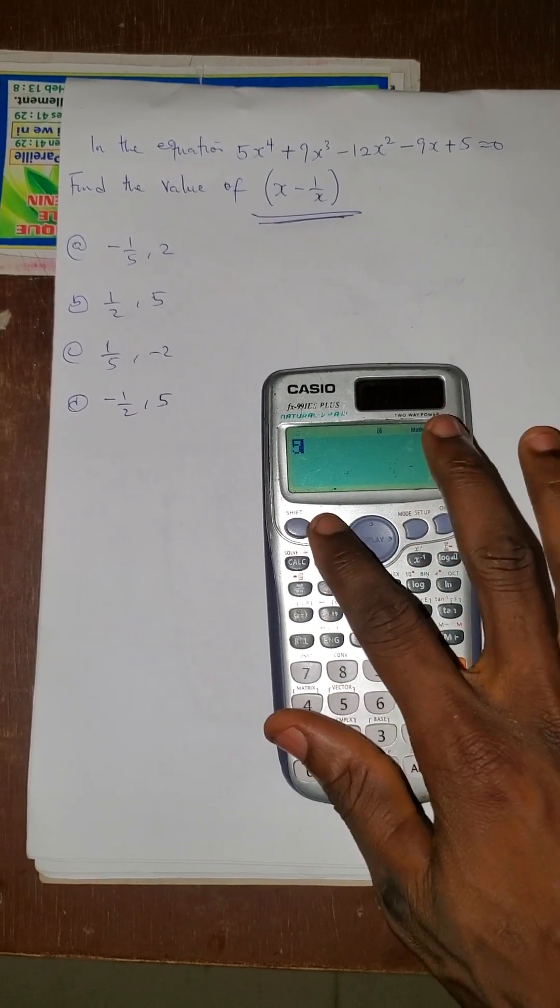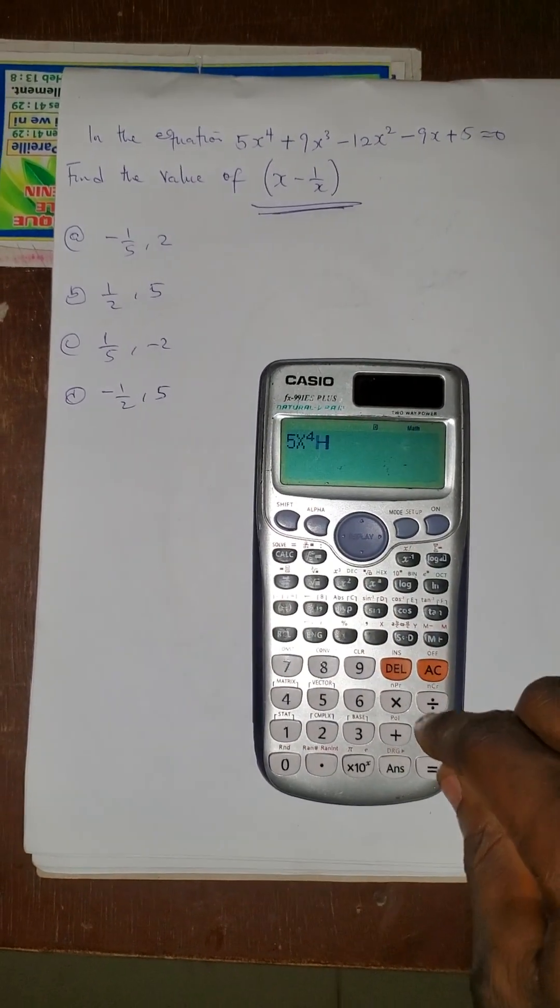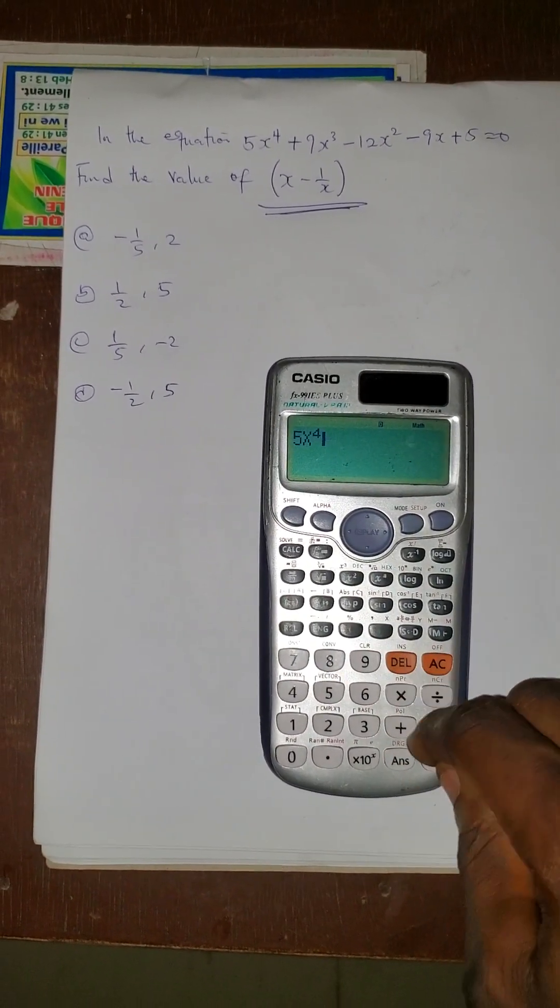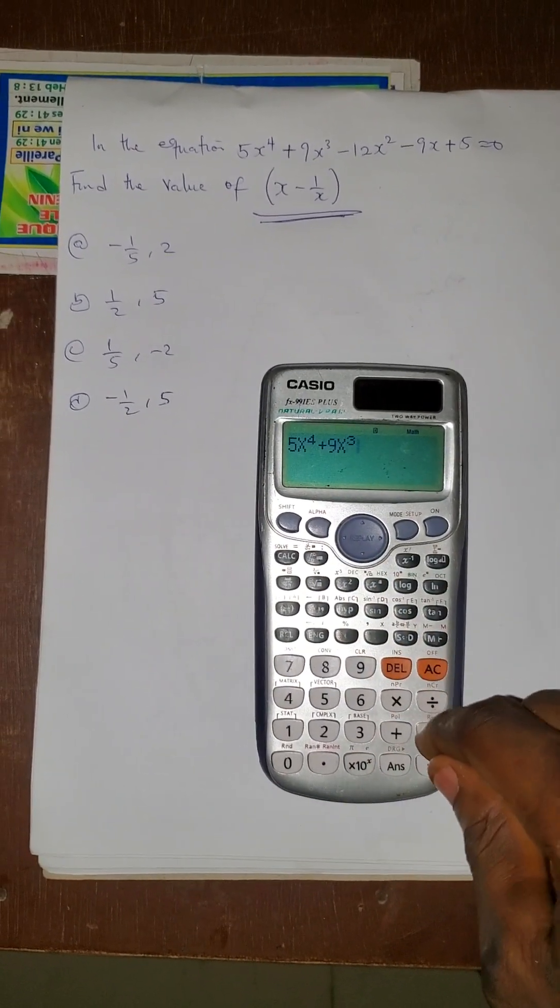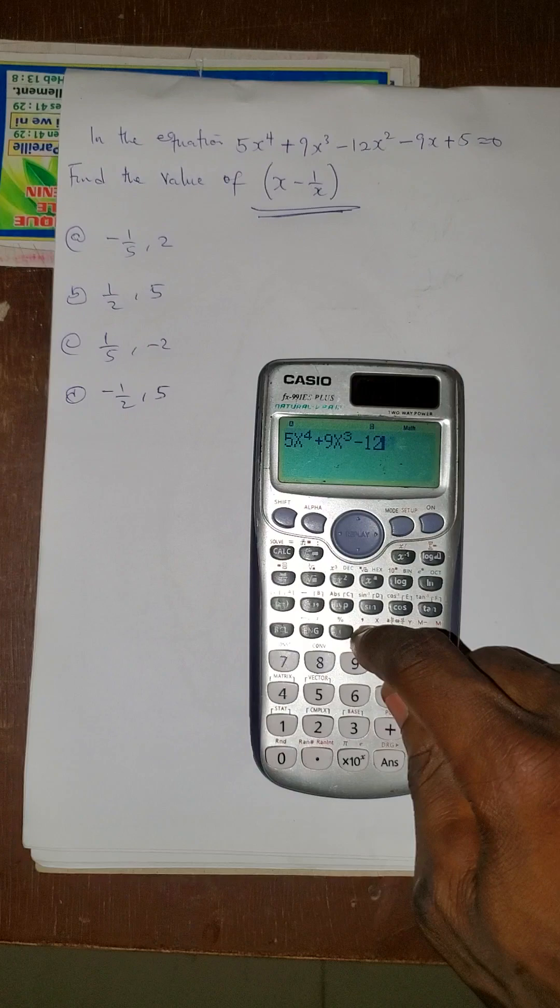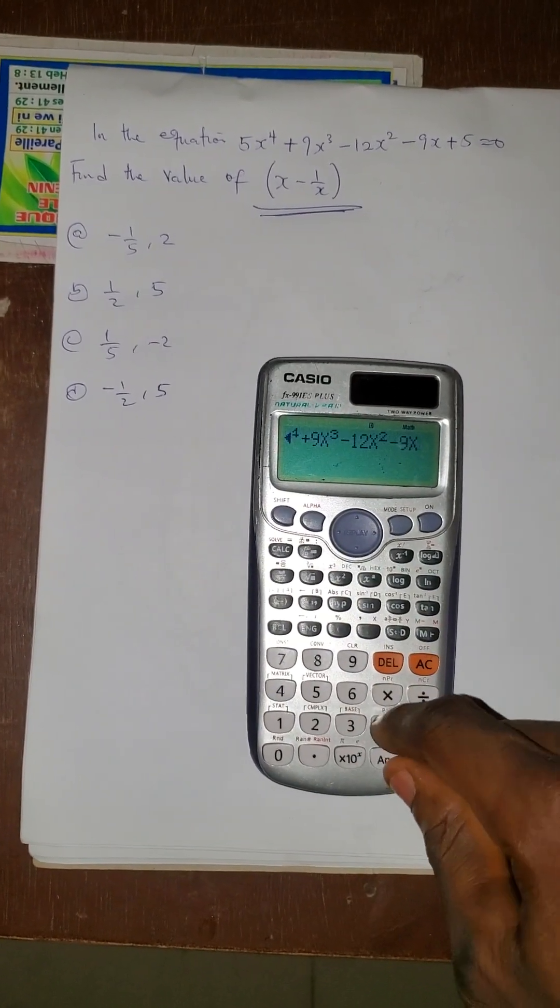I'm going to press the equation as 5 alpha x⁴, plus 9 alpha x³, minus 12 alpha x², minus 9 alpha x, plus 5.